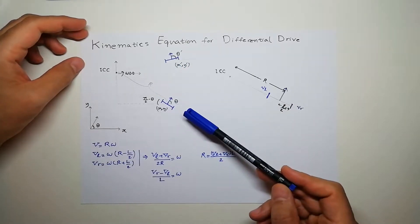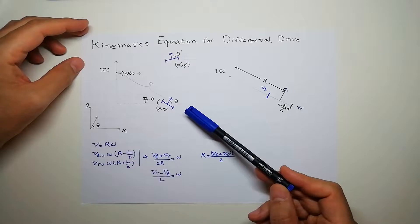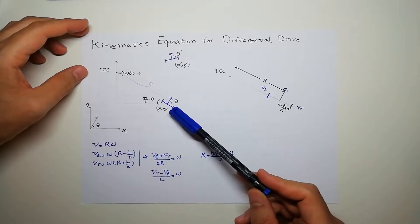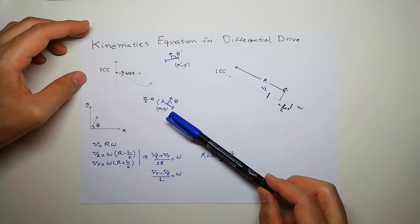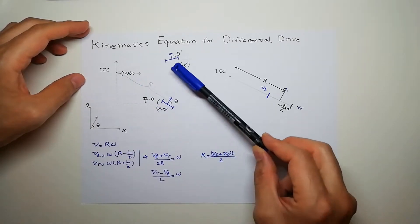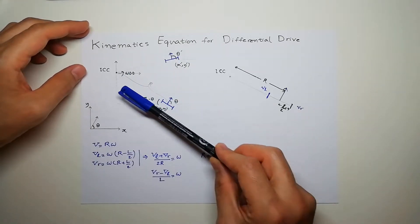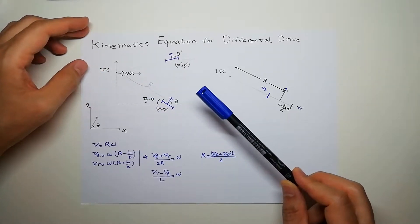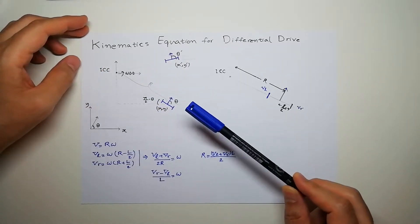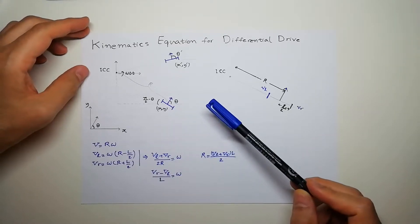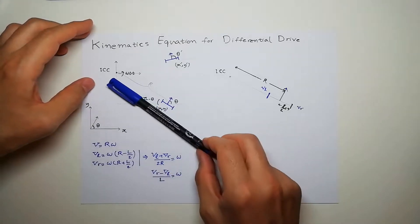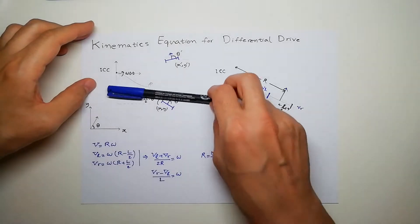Heading is this way. So if you draw a line that goes through the robot from the first position to the second position, you can find a point called ICC or instantaneous center of curvature or rotation, which you can imagine the robot has been actually turning around this point.